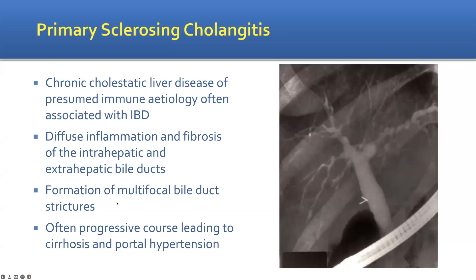The disease itself is a chronic liver disease involving cholestasis or impaired bile flow that we think is related to the immune system. It is often associated with inflammatory bowel disease, involving an inflammatory process with scarring of the intrahepatic ducts within the liver, as well as the common bile duct outside the liver. It leads to the formation of strictures, which impairs bile flow, often leading to a progressive course towards cirrhosis and complications, including elevated liver pressure.